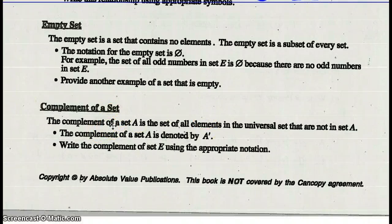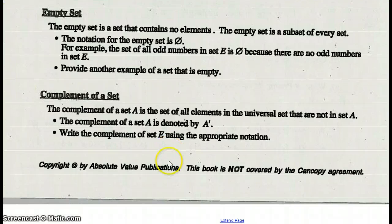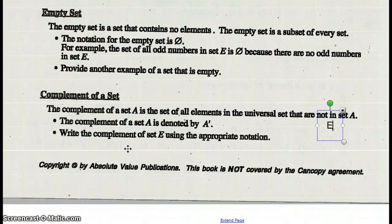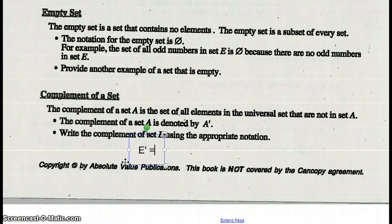Complement of a set. The complement of a set like set A is a set of all elements in the universal set that are not in set A. A complement of a set is denoted by A prime. Write the complement of set E using the appropriate notation. The set of numbers should equal the set of numbers that are not in set E. 1, 3, 5, 7, 9 are all the numbers that are not even but single digits that are non-negative.